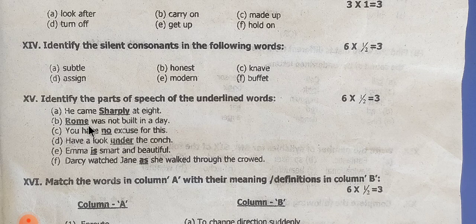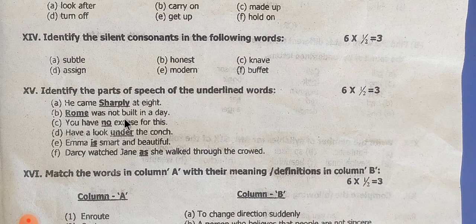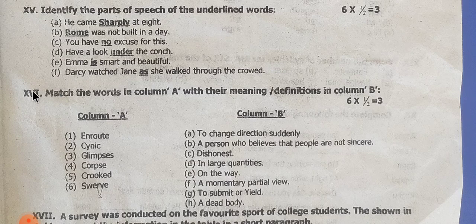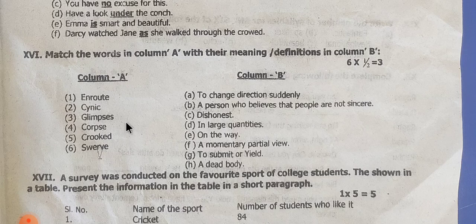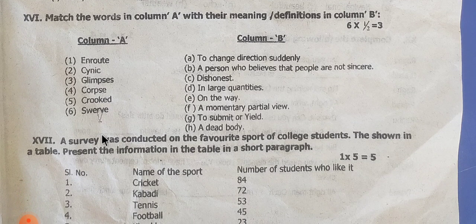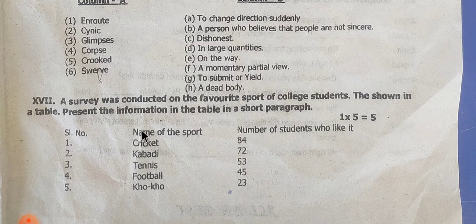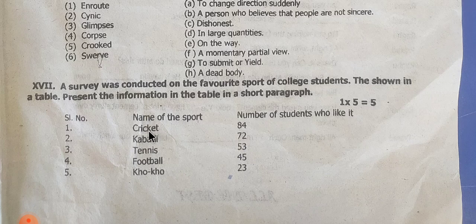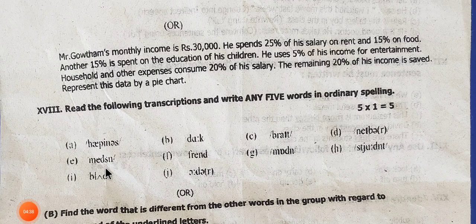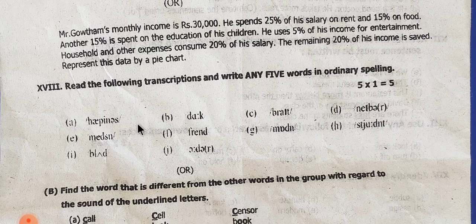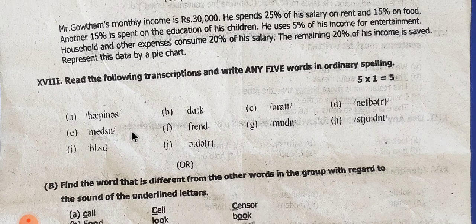Each one is half mark, so three marks total. Next, Roman number 16: match the following — Column A and Column B. If you match, you have half a mark. Next, Roman number 17: here is a paragraph, and Roman number 18 has any 5 words for 5 marks.